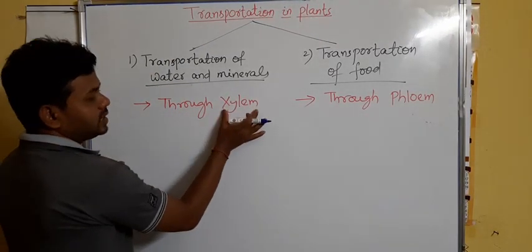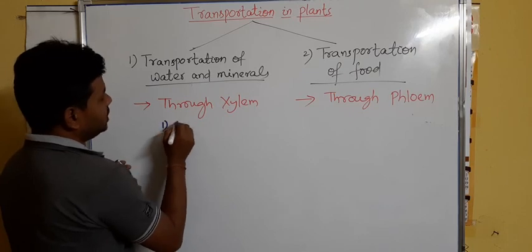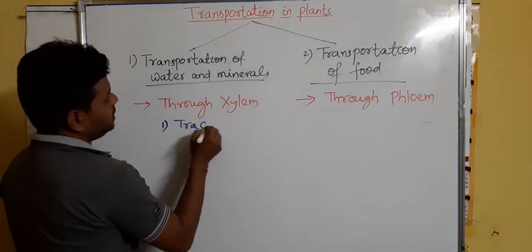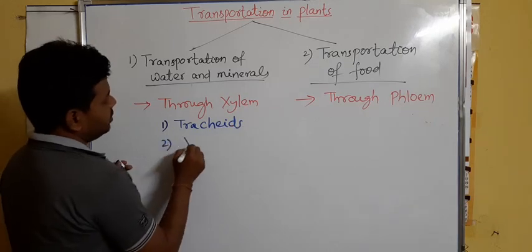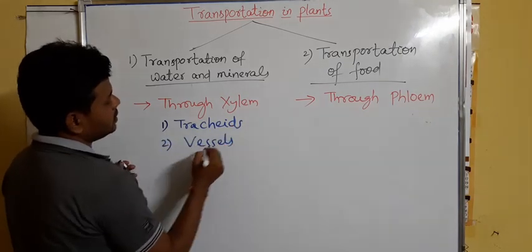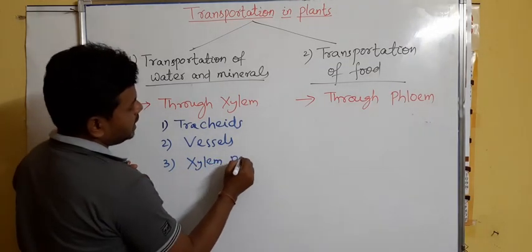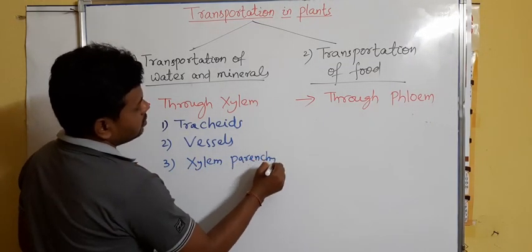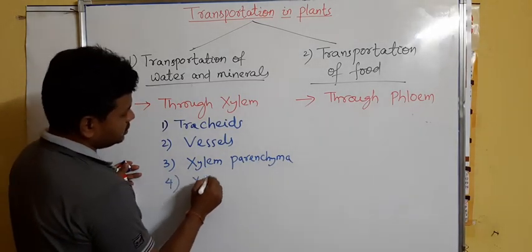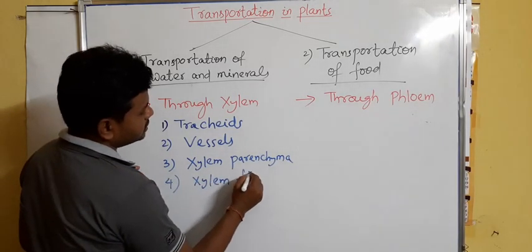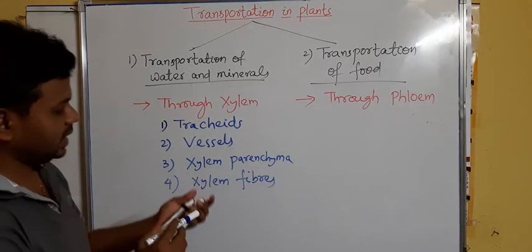As you have already read in standard nine, xylem and phloem are complex tissues as they are made up of four types of cells. Xylem is made up of: tracheids, vessels, xylem parenchyma, and xylem fibers. These are the four types of cells present in xylem tissue.